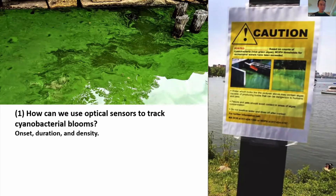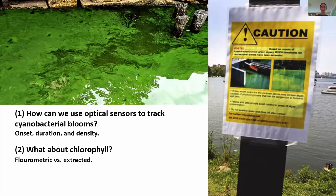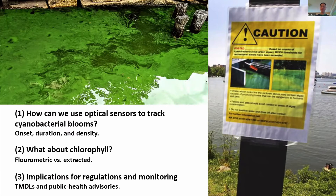So first I'll tell you what I'm going to cover. The first question is how can we use optical sensors to track cyanobacterial blooms? If we're interested in parameters like onset, knowing how long the bloom lasts, knowing what the peak bloom intensity is, how can we get there using optical sensors? Then I'm going to take a detour to talk about what our chlorophyll sensor is telling us, especially when we have a lot of cyanobacteria in our water bodies. And then I'm going to reflect on how this analysis can inform our thinking about regulations.